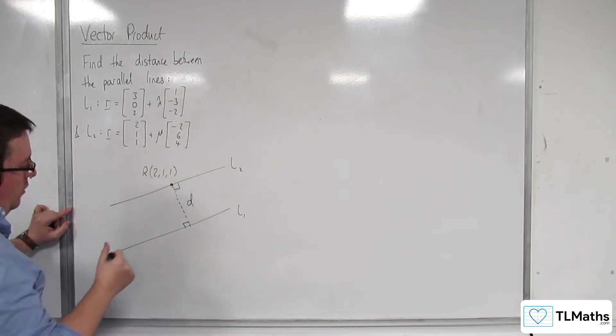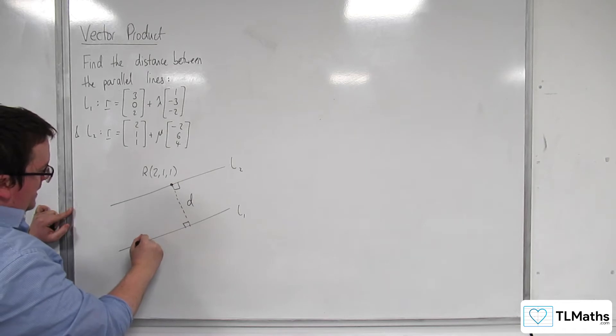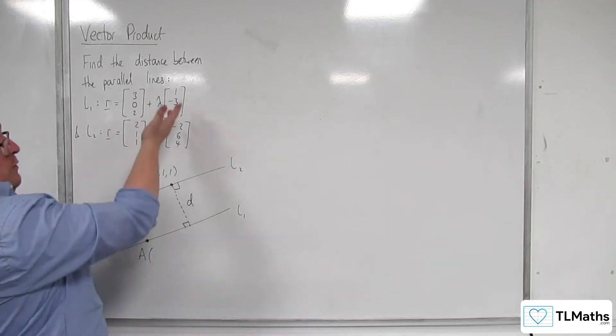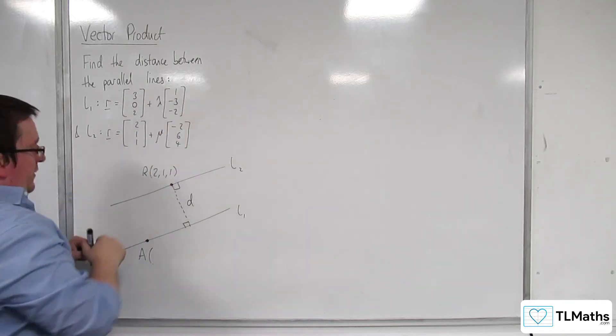And I'm also going to choose a point on L1. So let's say it's down here, and I'm going to call this one A. And I'm going to choose it where lambda is 0, so 3, 0, 2.